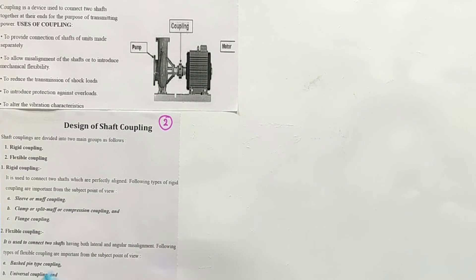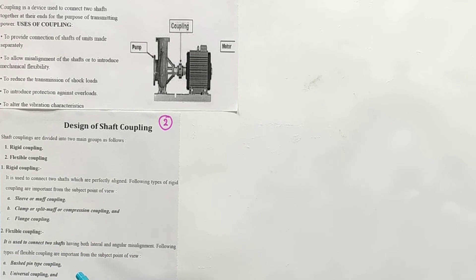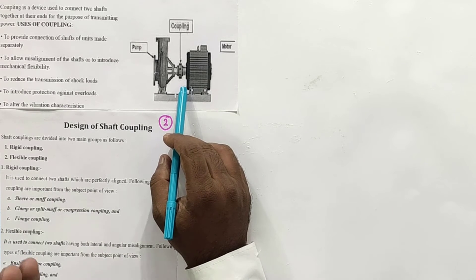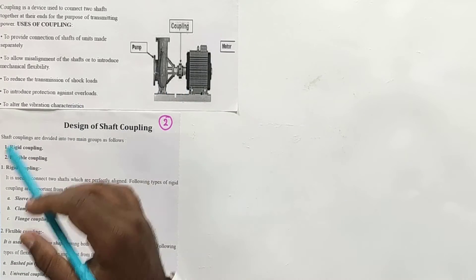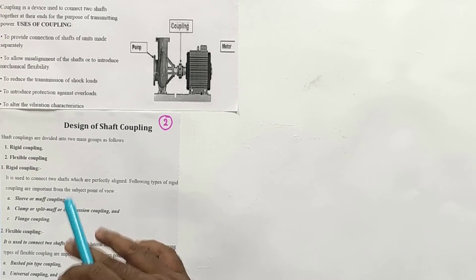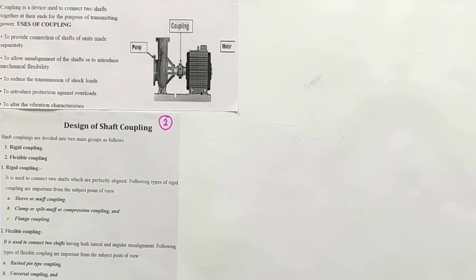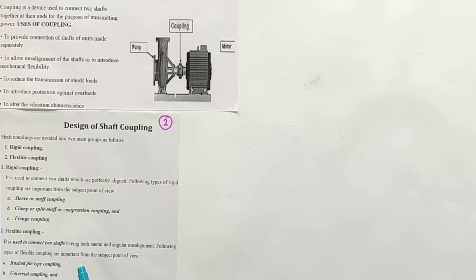You might have seen coupling used in many mechanisms, such as in theory of machines labs or research labs. The key purposes of coupling are: joining two shafts for transmission of power, providing connection between shafts made by different manufacturers, and allowing misalignment of the shaft or introducing mechanical flexibility.